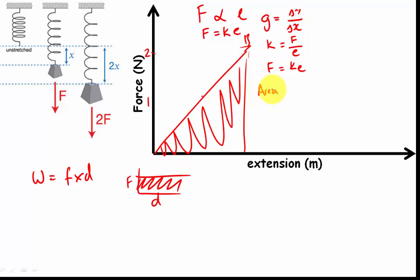So you need to think about how to calculate that area. Well, the area of a triangle will be given by a half base times height. So a half, and in this case the base is the extension, and the height would be the force. That will give you the energy or the work done required to stretch the spring, or the energy in the spring. I'm going to give it the same symbol that AQA uses, E little e.